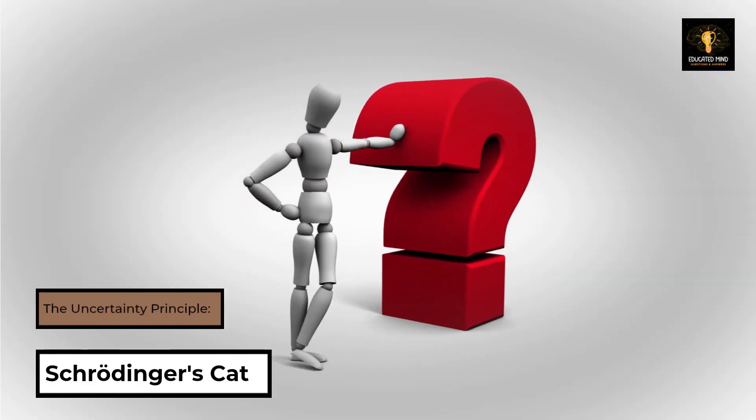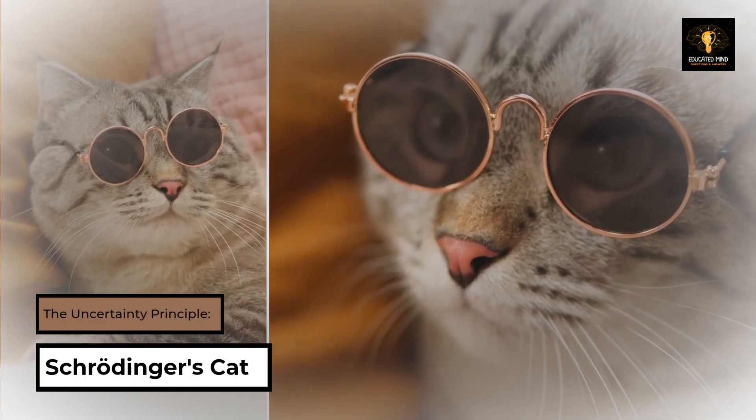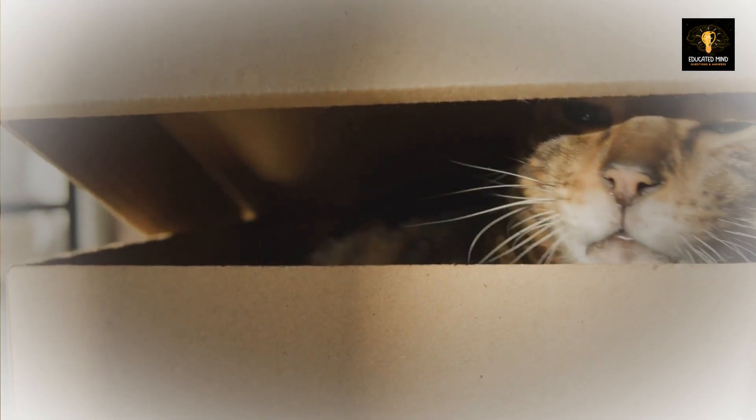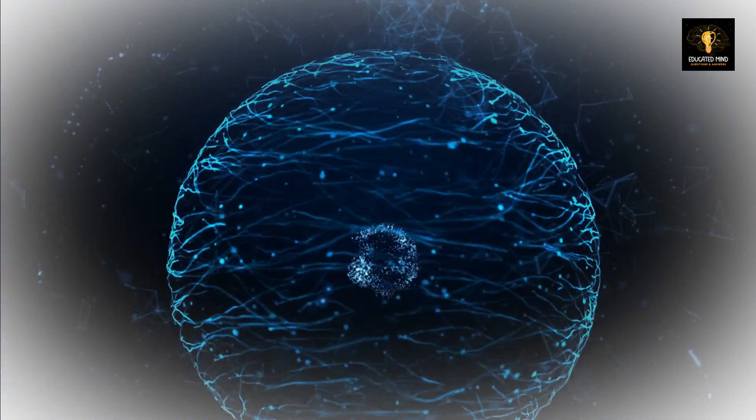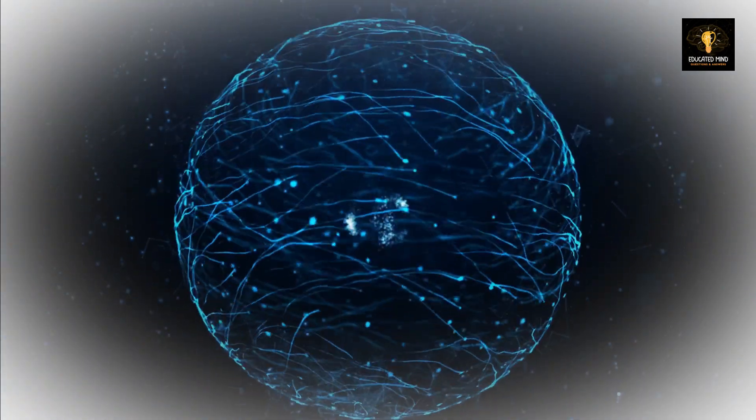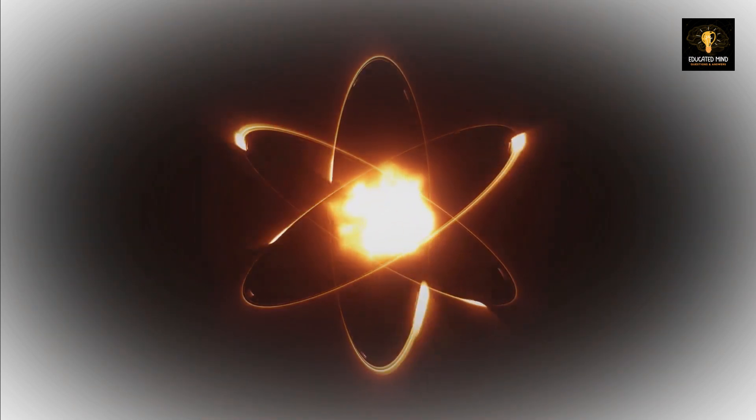The uncertainty principle, Schrodinger's cat. Picture Schrodinger's cat in a box, both alive and dead at the same time. Weird, right? This thought experiment illustrates the uncertainty principle, which states that at the quantum level, we can't know both a particle's position and momentum precisely.